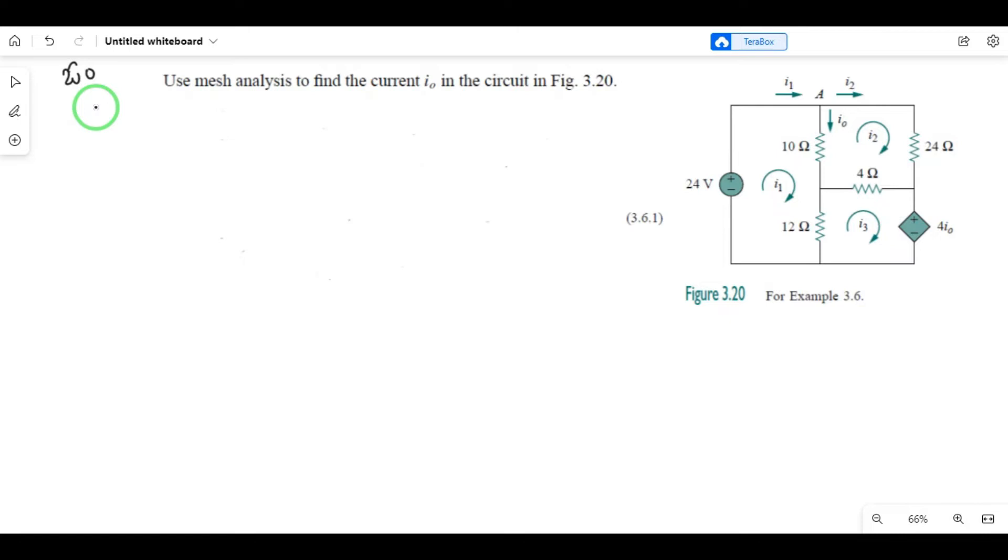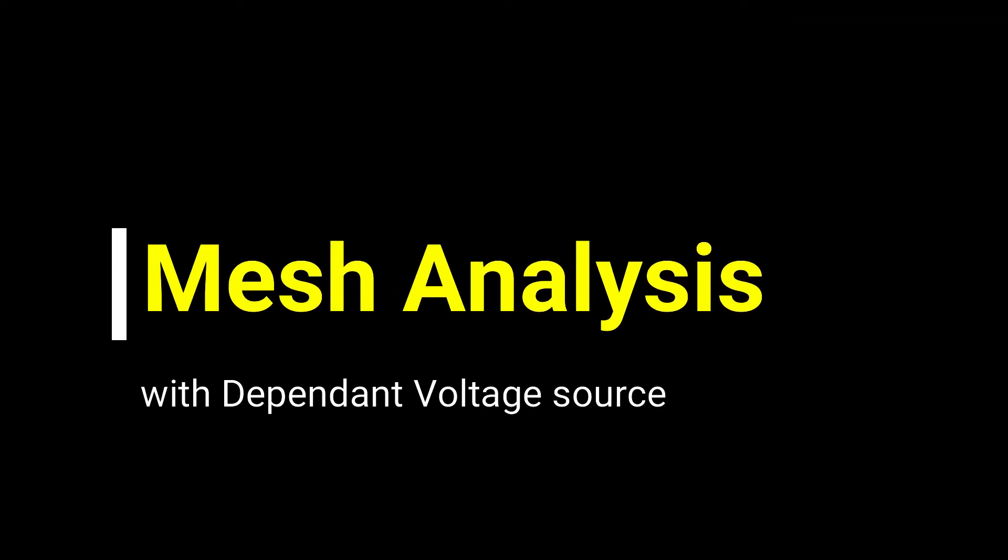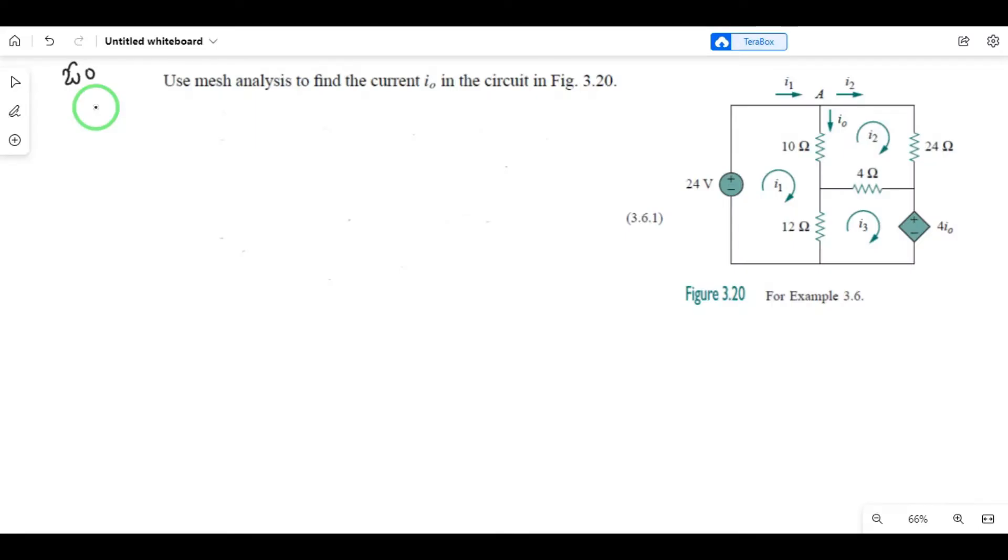Hi everyone, in the previous class we covered mesh analysis with only voltage sources. In this lecture, we'll cover mesh analysis with dependent voltage sources. Many students find dependent sources confusing, but one particular solution method makes it easier. In this question, we need to find the current i. We'll solve this problem with the dependent source using the same logic as before, very easily.